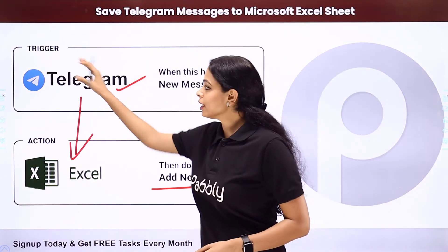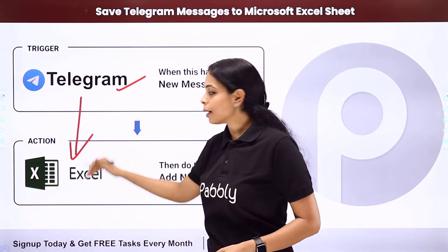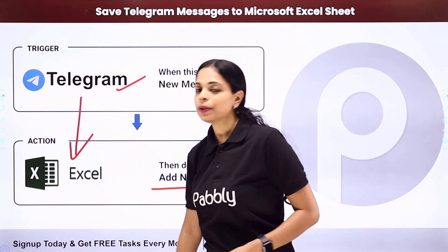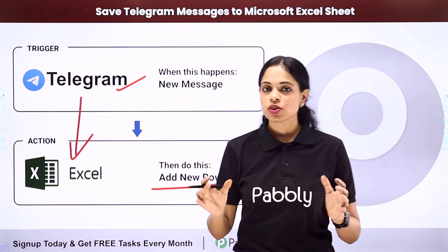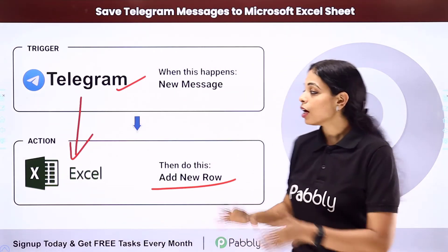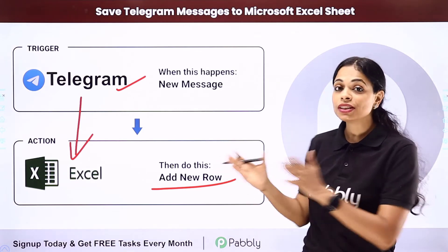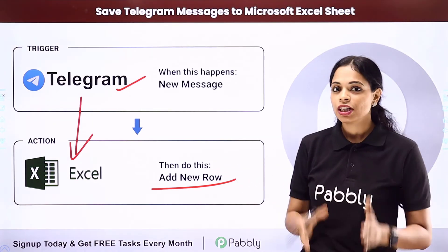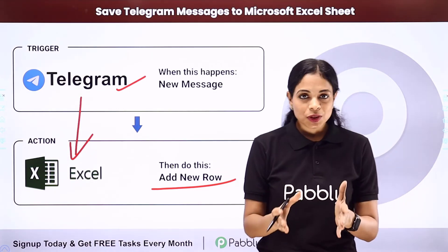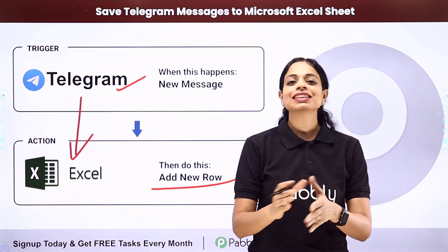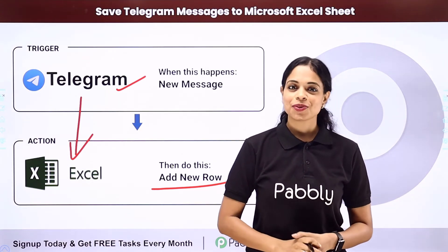Your trigger application would be Telegram and your action application would be Microsoft Excel. To show you how to do this yourself, let me take you to my screen.